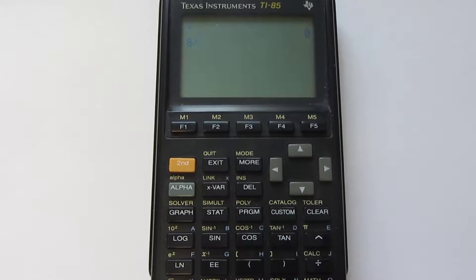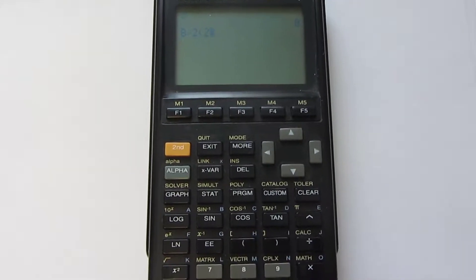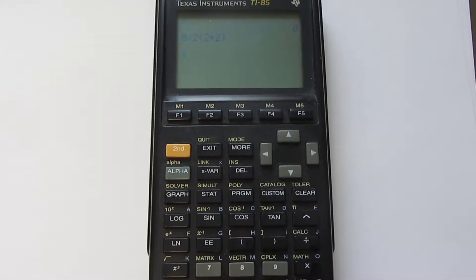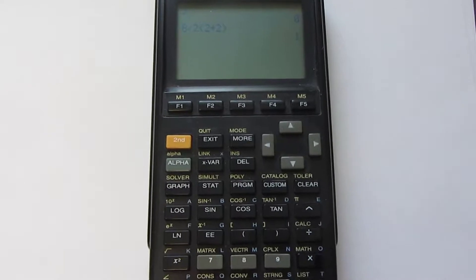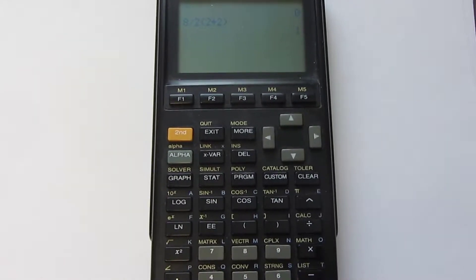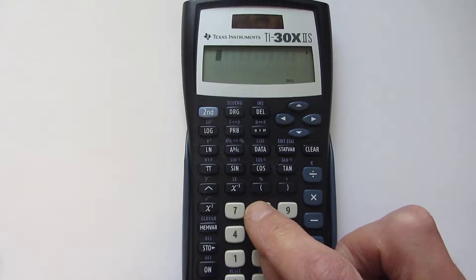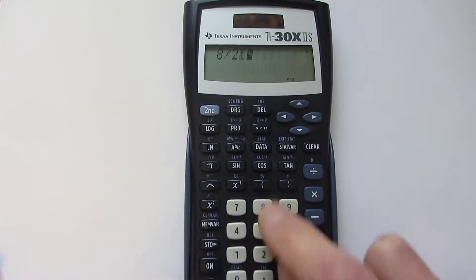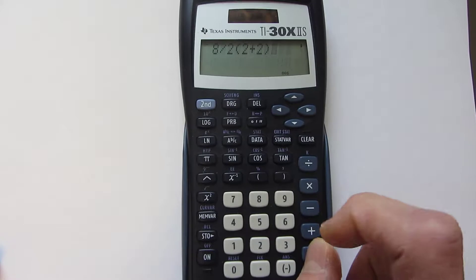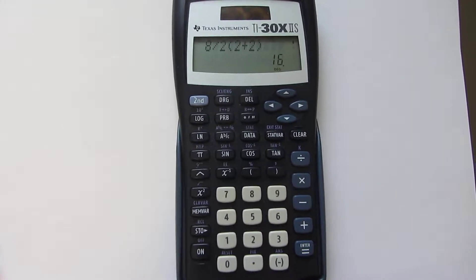TI calculators, same thing typed in, two different answers. Let's go to a TI-30X - this happens to be one of the ones that's approved for use - and we type it all in: 16. Now let's try the Windows calculator. We type it all in - something funny is going on with